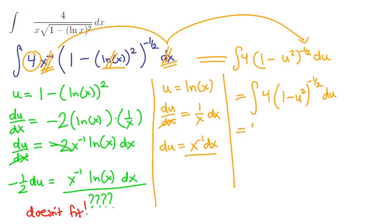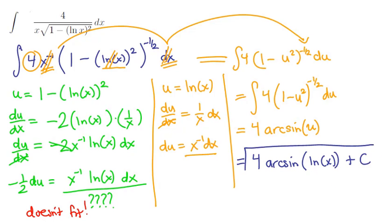The 4 comes along for the ride, and the remaining part is simply the arcsine of u. Now if we back substitute, we're going to have 4 times the arcsine of u. The u that worked this time was ln of x, and so there's one antiderivative and now here's every antiderivative.